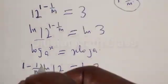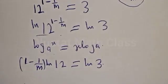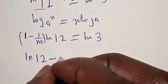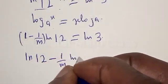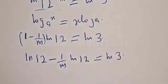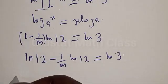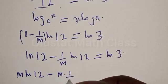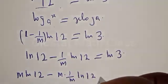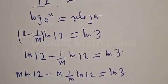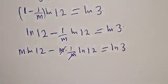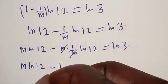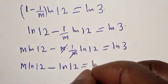Then let's expand this bracket by natural log of 12. We have natural log of 12 minus 1 over m natural log of 12 equal to natural log of 3. Now let's multiply all through by m. We have m natural log of 12 minus m multiplied by 1 over m natural log of 12. This cancels, giving us m natural log of 12 minus natural log of 12 equal to natural log of 3.